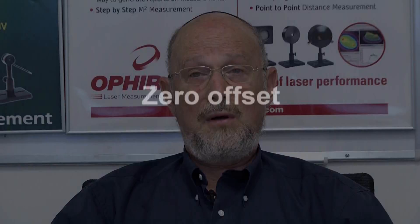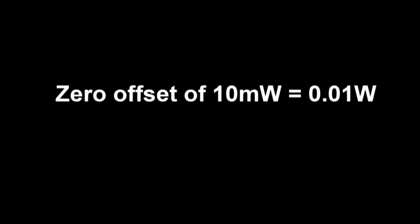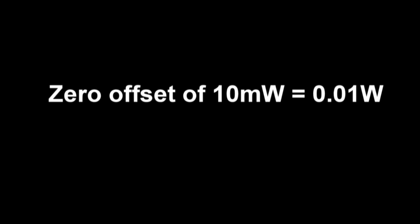Now in addition to that, we have another kind of error called zero offset. The zero offset becomes important when we're trying to read a very small value. What is zero offset? It means that even if we put no input into the meter, we get a reading even so. Now that could be because of external heat sources or the fact that the meter was not zeroed properly. Now let's say that there was a zero offset of 10 milliwatts, 0.01 watt.